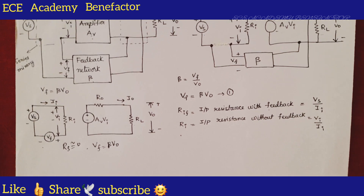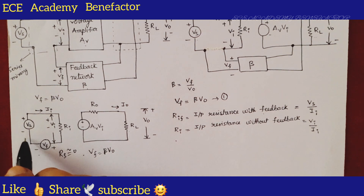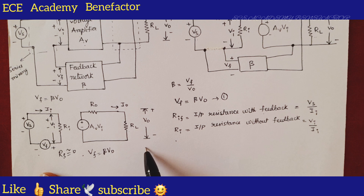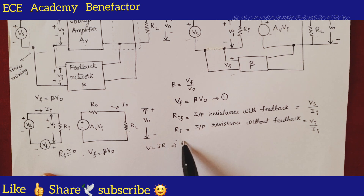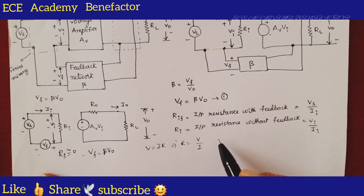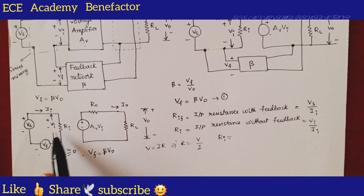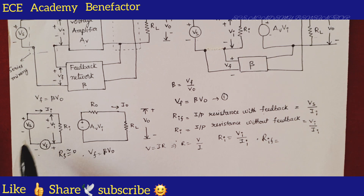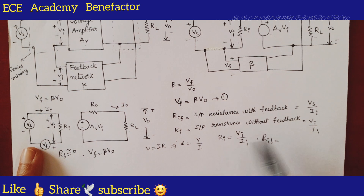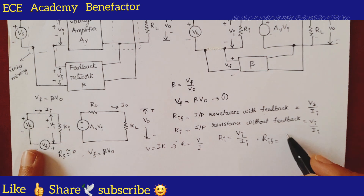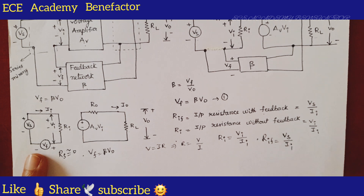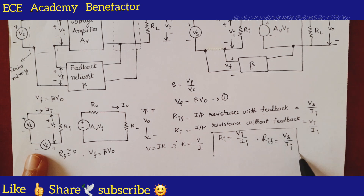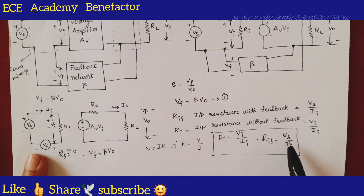The output circuit is drawn as: AV·Vi, Rnaught, output current Inaught, and RL. Now, what is the definition of Rif? By Ohm's law, R = V/I. So simply Ri = Vi / Ii. But now we need to find Rif — with feedback — meaning we are looking from the source point, so Rif = Vs / Ii.